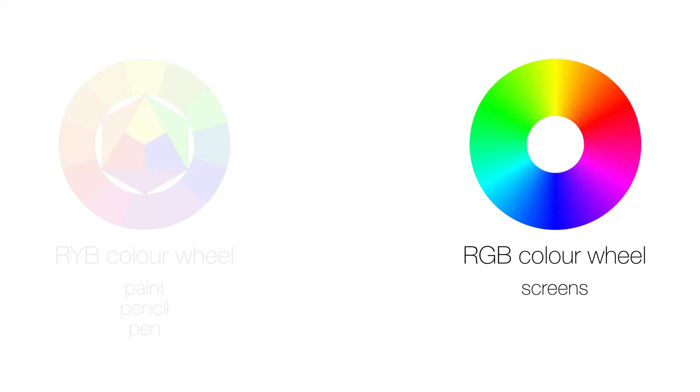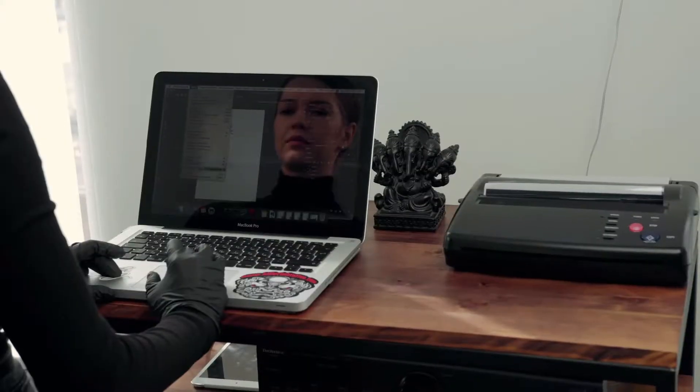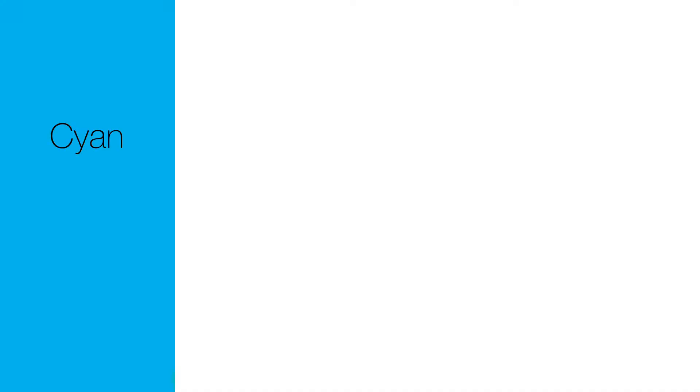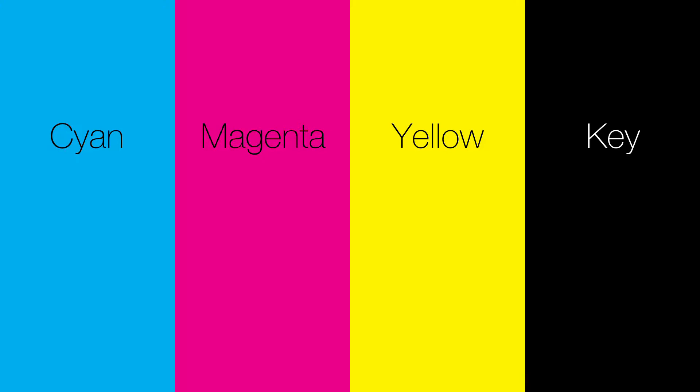That's it, surely? Again, not quite. RGB doesn't make a very wide range of colours, especially softer tones. So commercial printers — and even the printers in your home or school — use cyan, magenta, yellow and key, or black. This is called CMYK.